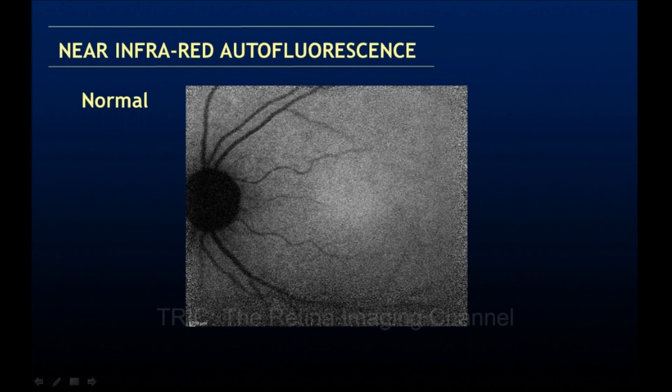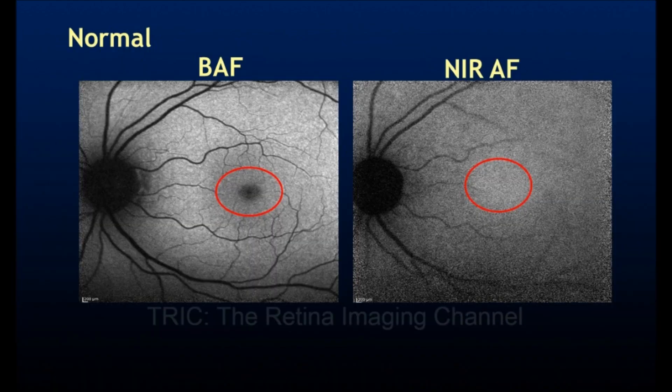In a near-infrared autofluorescence image, the vessels are black and the retina is gray, but the retina is not as bright as in blue autofluorescence, and the optic nerve is also black. The key differentiating feature is the fovea: in near-infrared autofluorescence, the fovea is the brightest point because it has the maximum concentration of melanin. Comparing the two images side by side, the fovea is the primary differentiating point.